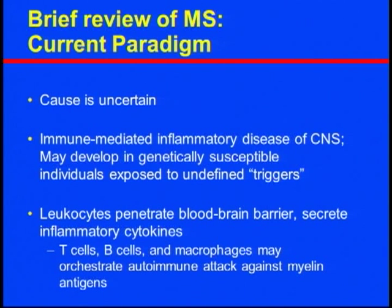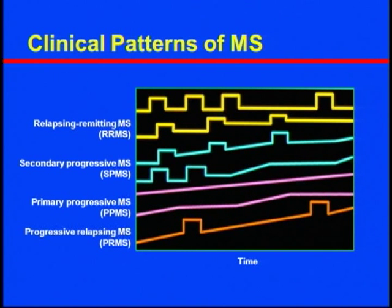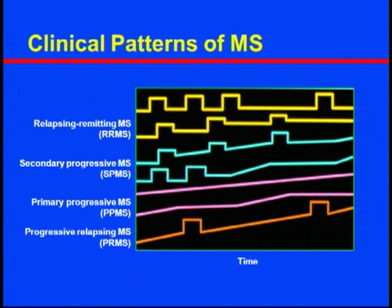It's important to understand this because when we discuss drug mechanisms of action, we need to understand the basis of what causes MS. MS is a heterogeneous disease — different folks can present with different courses. Based on natural history studies, 85% of patients present with relapsing-remitting MS.